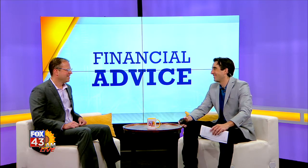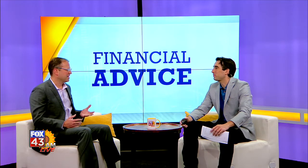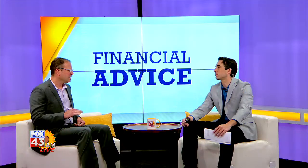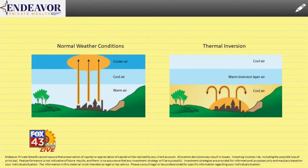I'll be happy to try. It may be helpful to think about inversion in the context of normal and abnormal weather conditions. Under normal weather conditions, air temperatures decrease as the altitude increases, and that's what we experience when we go for a hike in the mountains — it gets cooler the higher we go. However, there are times when the normal conditions abate, and it's called a thermal inversion — a phenomenon where the warm air becomes trapped and keeps the cooler air near the surface.